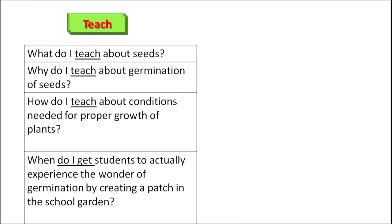Let us consider an illustration. We as teachers love to teach. As a teacher, look at the left-hand column. It says: What do I teach about seeds? Why do I teach about germination of seeds? How do I teach about conditions needed for proper growth of plants? When do I get students to actually experience the wonder of germination by creating a patch in the school garden? These are nothing but my instructional objectives.